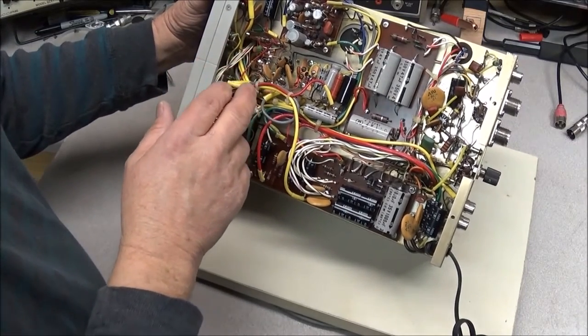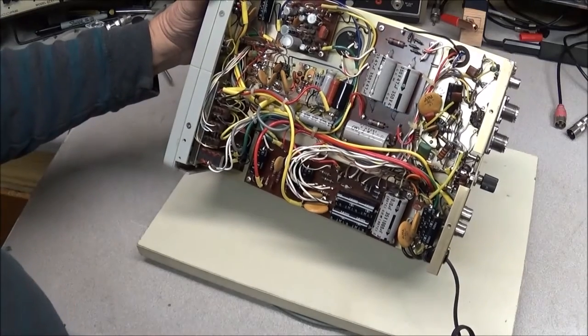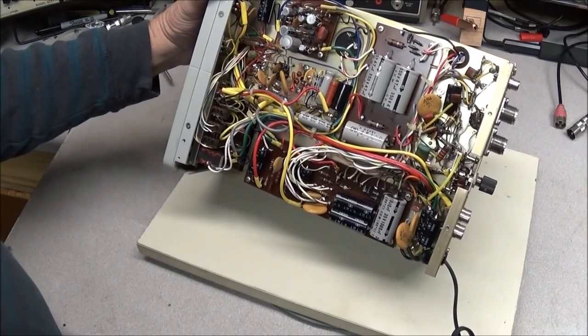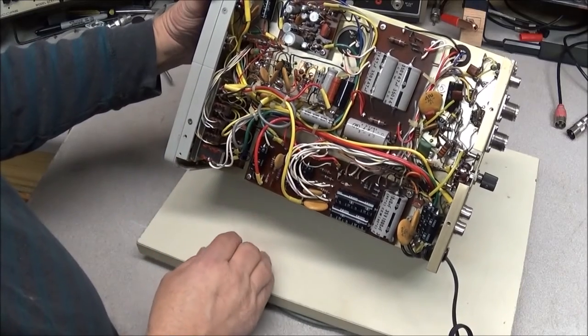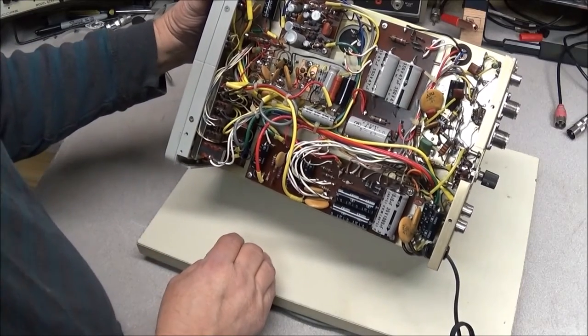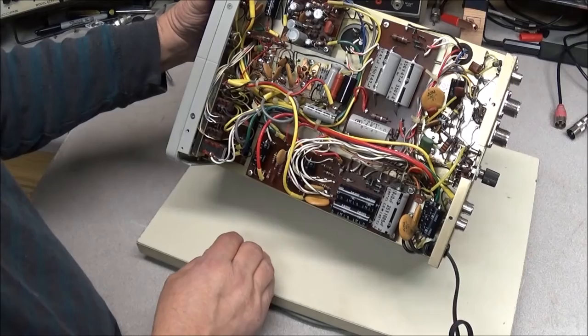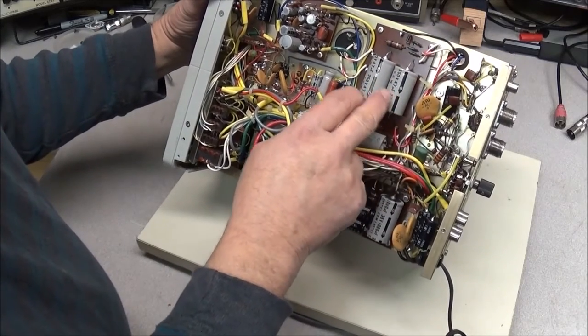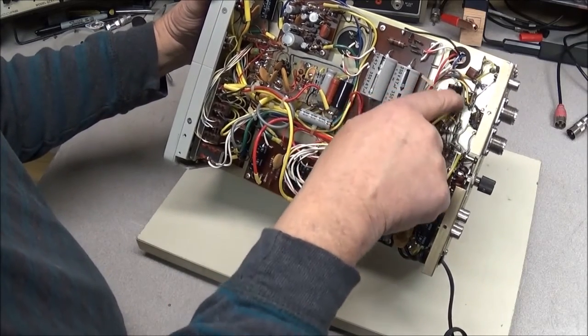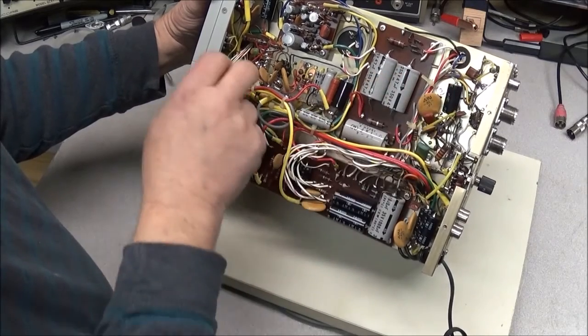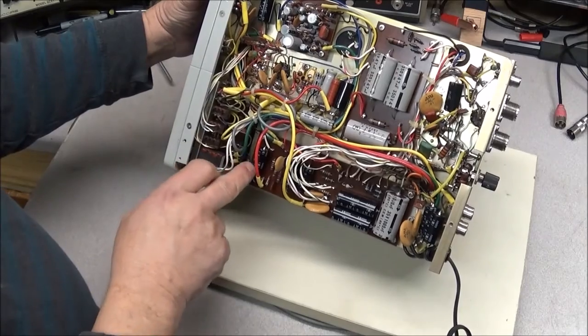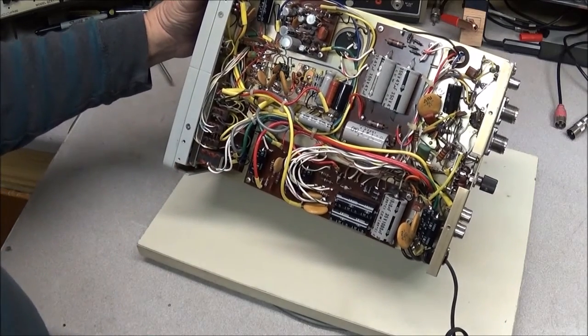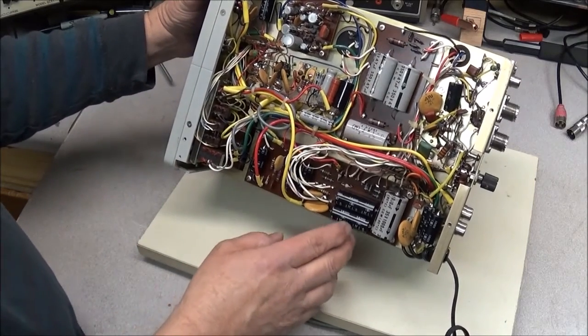When working on this old stuff, you can always use your five senses instead of grabbing a bunch of test equipment. You can look at it and smell around, and you'll be surprised at the things you can find. And if you notice, it has a lot of these oil field caps in here. They're 0.1 microfarads at 600 volts.